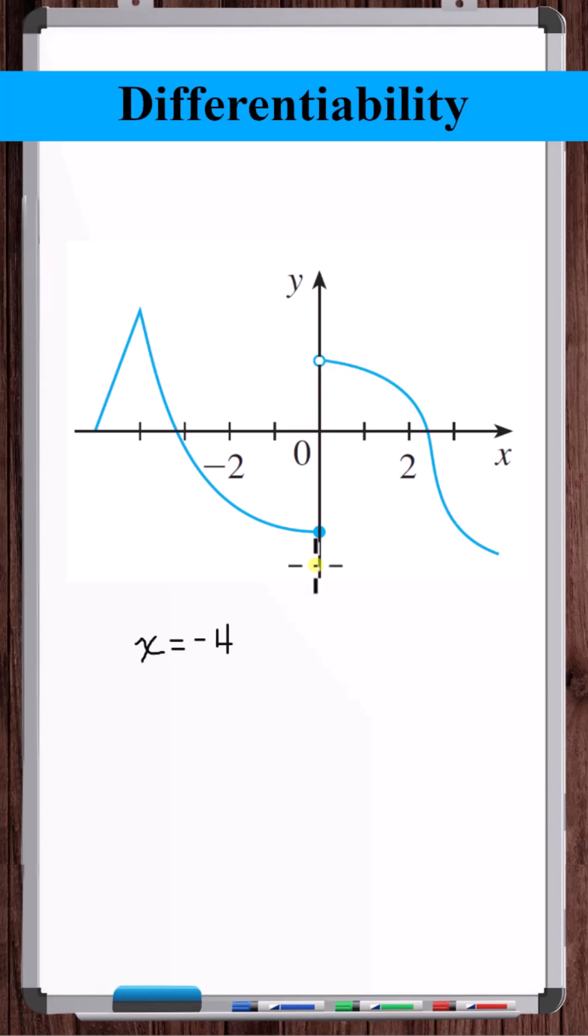For a function to be differentiable at a point, that point can't be a discontinuity. So x is equal to zero, it's not differentiable.